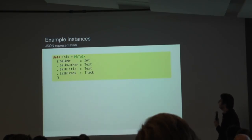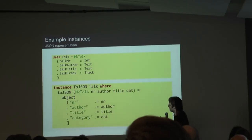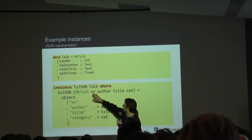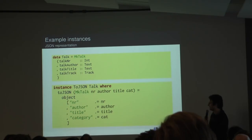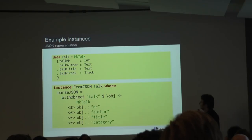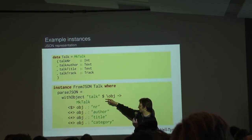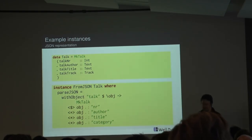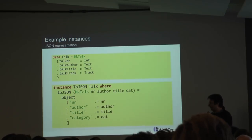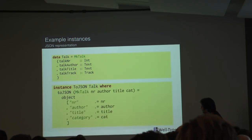That's not so great. If we want to do the same thing for Talk, we create a ToJSON instance matching on the MakeTalk constructor — with a number, author, title, and category — and produce a JSON object with those fields. We can also go the other way and parse by expecting the incoming JSON to be an object, looking up those four fields, and combining them together. Again, you're essentially writing down the same correspondence twice.